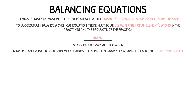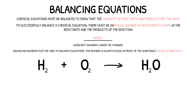Let's take a look at this concept in practice. In a chemical reaction, hydrogen and oxygen react to make water. The symbol equation for this reaction would look like this. In the reactants we have two atoms of hydrogen and two atoms of oxygen. However, in the products we have two atoms of hydrogen and only one atom of oxygen. This equation does not follow the law of conservation of mass, as there are fewer oxygen atoms in the products than there are in the reactants.